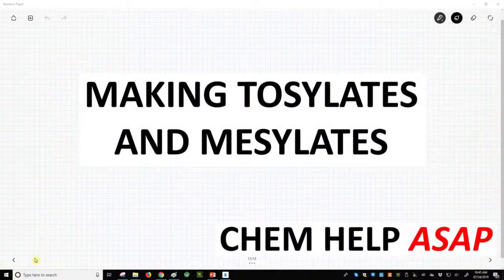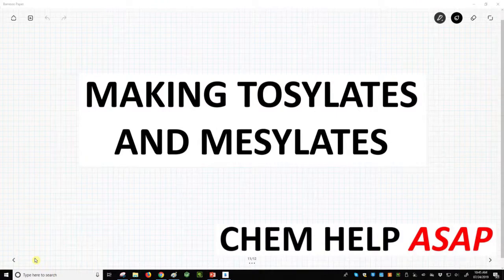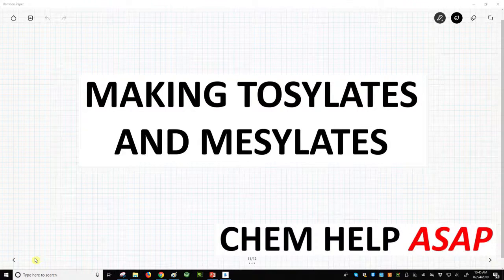Welcome to Chem Help ASAP. We've learned about how to convert alcohols into leaving groups, and primarily halides is what we discussed. We talked about all kinds of methods to go from an alcohol to a halide.